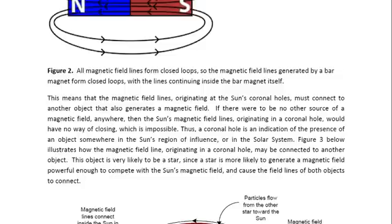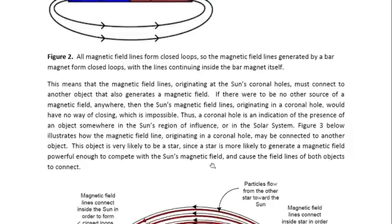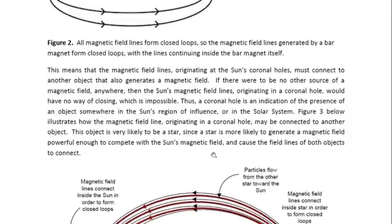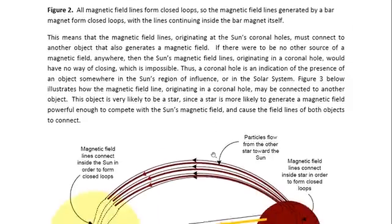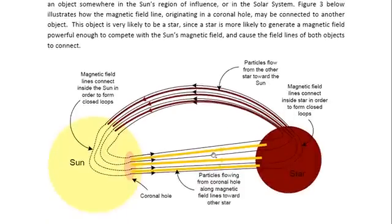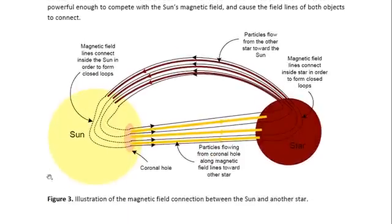And therefore, the Sun must connect to that object magnetically in order for the magnetic field lines to close. And this is illustrated in this figure. So what we have is the Sun, we have a coronal hole on the Sun, we have the magnetic field lines flowing out from the Sun, and it is connecting to this other star. And then there is a returning of the magnetic field lines back to the Sun.